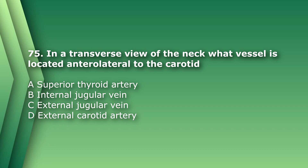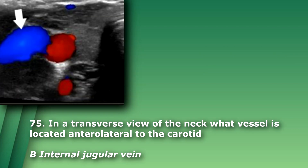Question 75: In a transverse view of the neck, what vessel is located anterolateral to the carotid? A) superior thyroid artery, B) internal jugular vein, C) external jugular vein, D) external carotid artery. The answer is B, internal jugular vein.